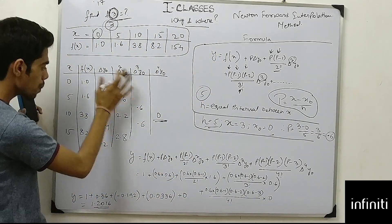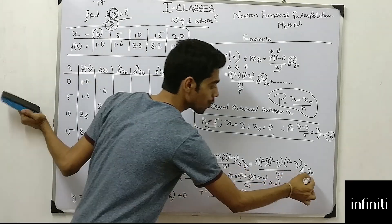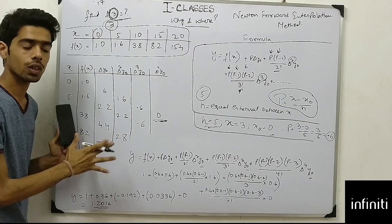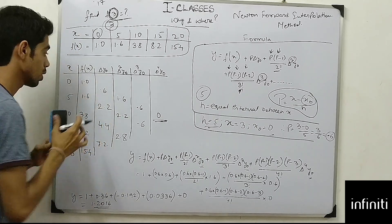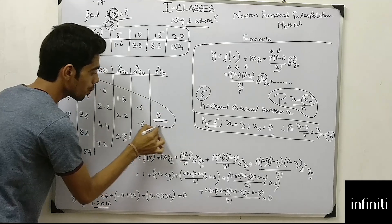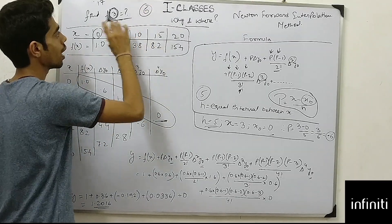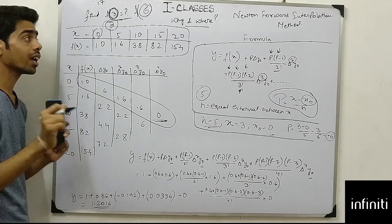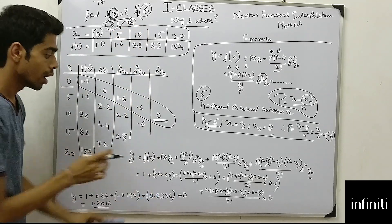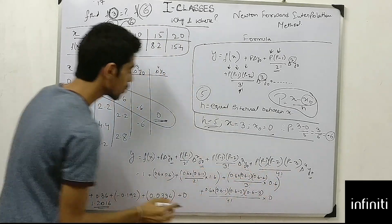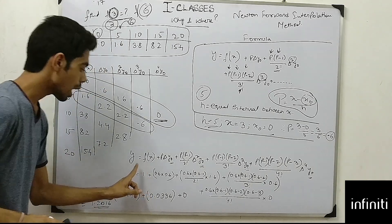There are multiple values in the table — which ones do you use for Δy0, Δ²y0, Δ³y0? Since x0 is 0, you take the diagonal values corresponding to x0 = 0. For example, if you had to find f(6), x0 would be 5, and you would take the diagonal values starting from x0 = 5.